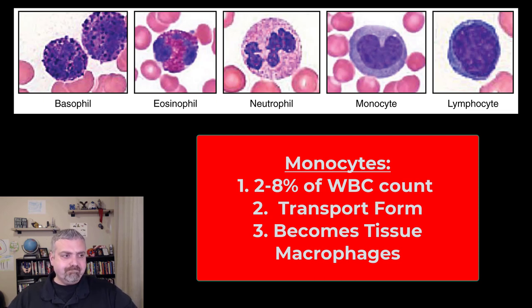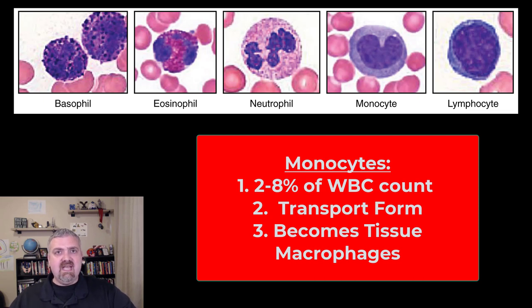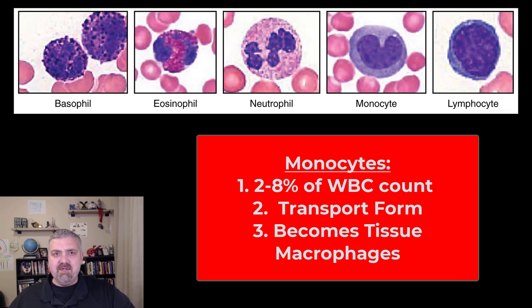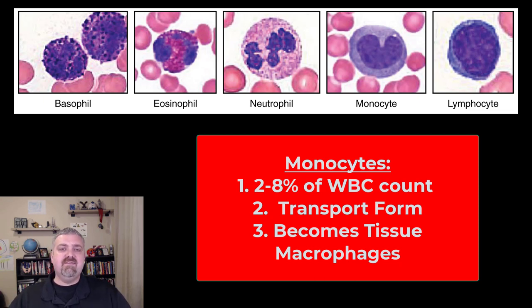When would you see monocytes elevated? In viral infections, some fungal infections, and tuberculosis — they're fighting off and killing these cells. They also release chemotactic chemicals that call other white blood cells to the area, and defensins that can destroy bacterial and fungal cell walls, but their primary role is to engulf stuff.